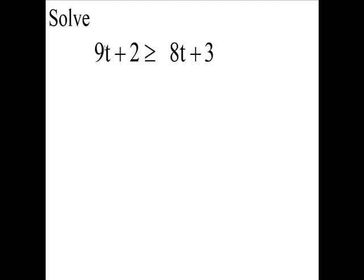Now, when you have 9t here and 8t here, we have to get rid of one of these t's. Which one do we get rid of? Which one's smaller, 8 or 9? 8 is the smallest, so that's the one we're going to get rid of. Subtract 8t here and here.